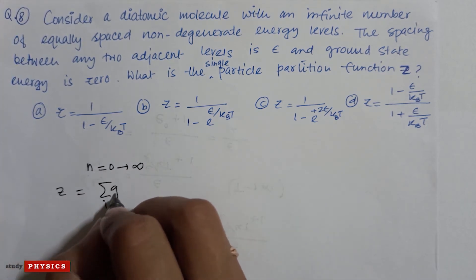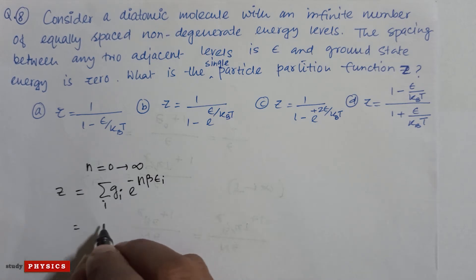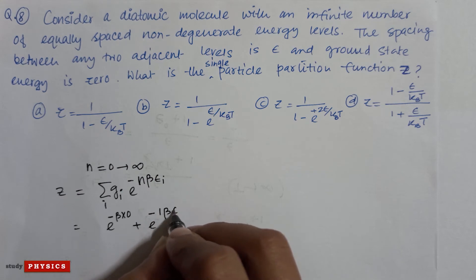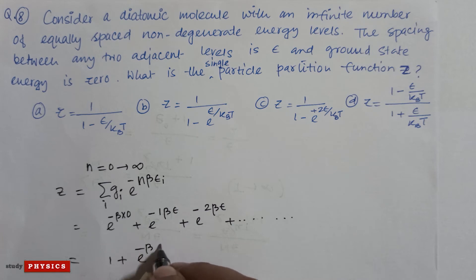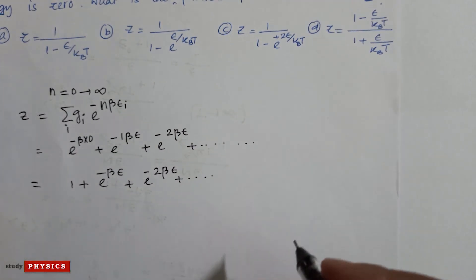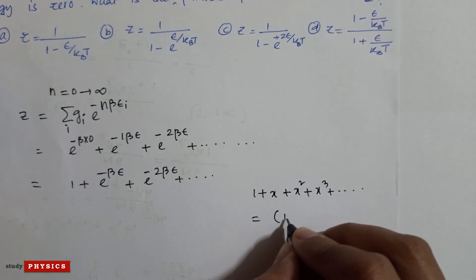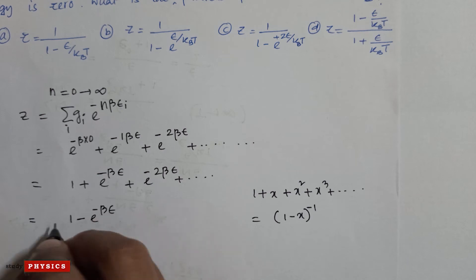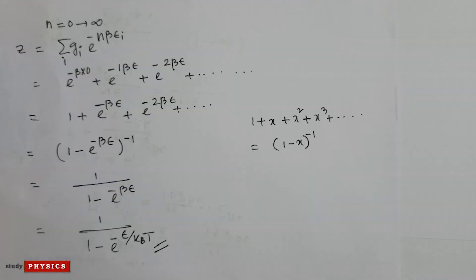Since g_i = 1 (non-degenerate), Z = e^(−β×0) + e^(−β×ε) + e^(−β×2ε) + ... = 1 + e^(−βε) + e^(−2βε) + ... This is an infinite geometric series. Setting x = e^(−βε), we get Z = 1 + x + x² + x³ + ... = 1/(1−x) = 1/(1 − e^(−βε)). According to me this is the correct answer, but it is not matching with any of the given options.